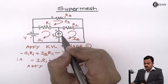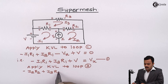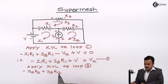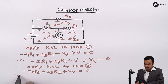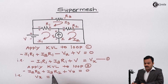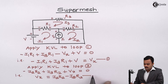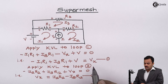Applying KVL to loop two: in the direction of current I get minus I2·R2, then because of I3 I get plus I3·R2, and the voltage of the current source is plus Vx, giving minus I2·R2 plus I3·R2 plus Vx equals zero. Rearranging, keeping Vx on one side: Vx equals I2·R2 minus I3·R2. This is Equation 2.